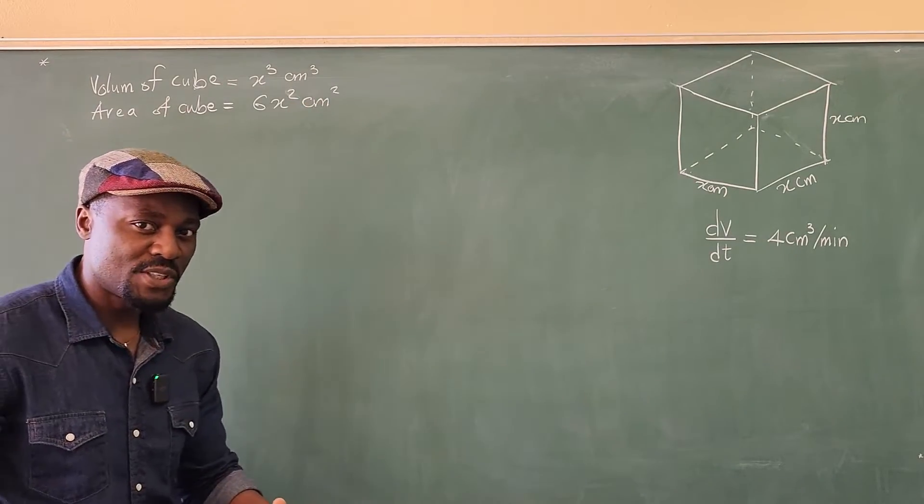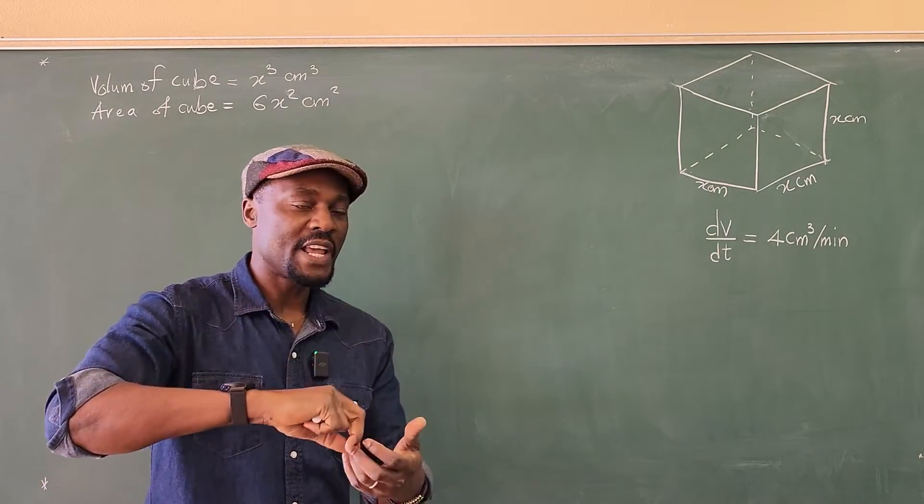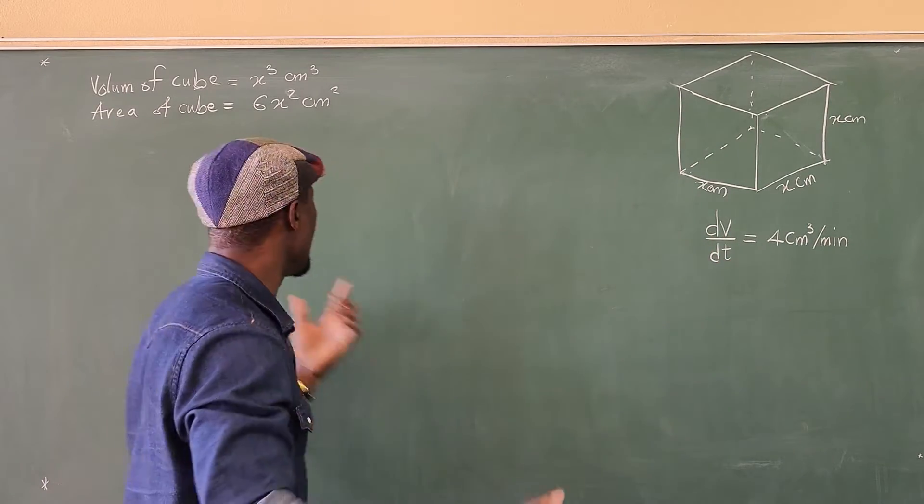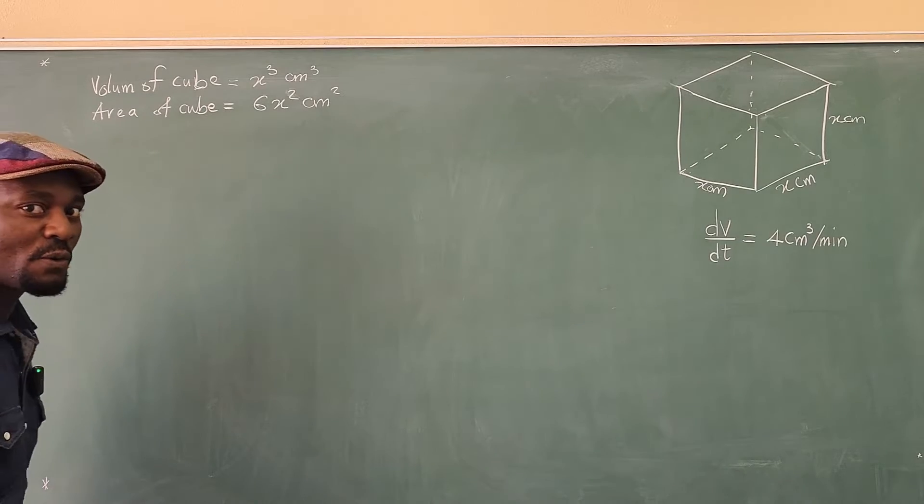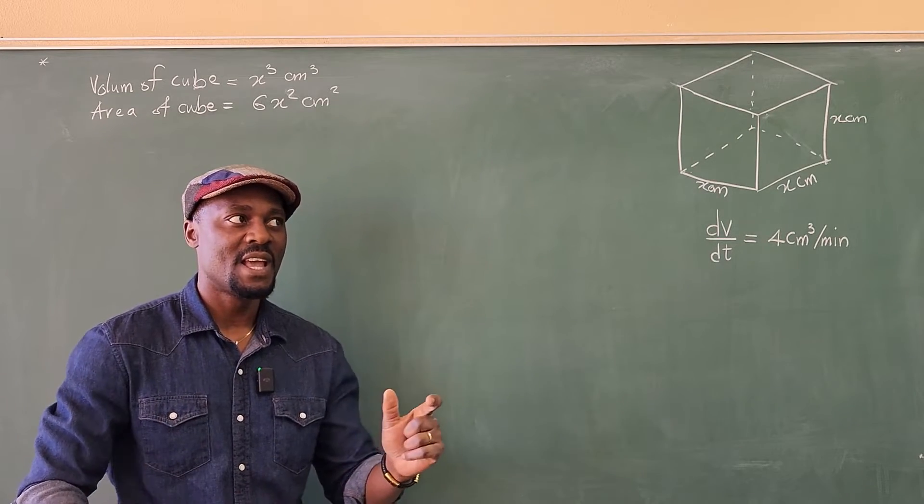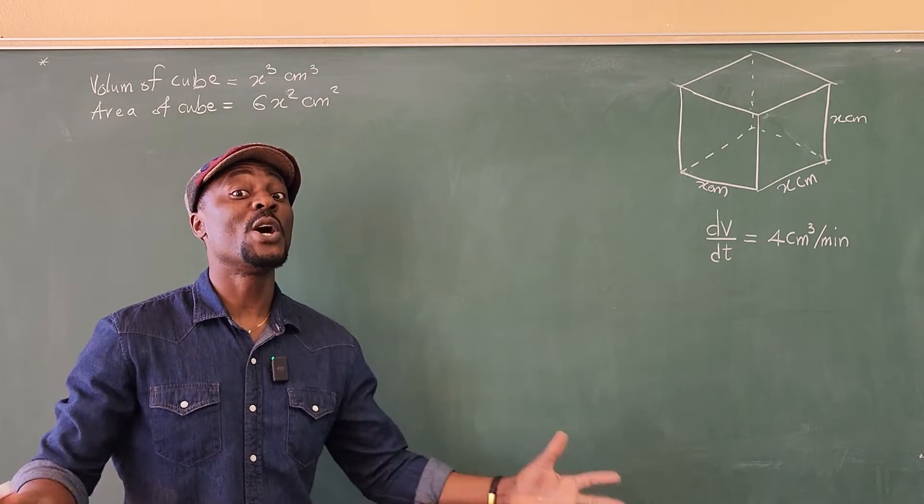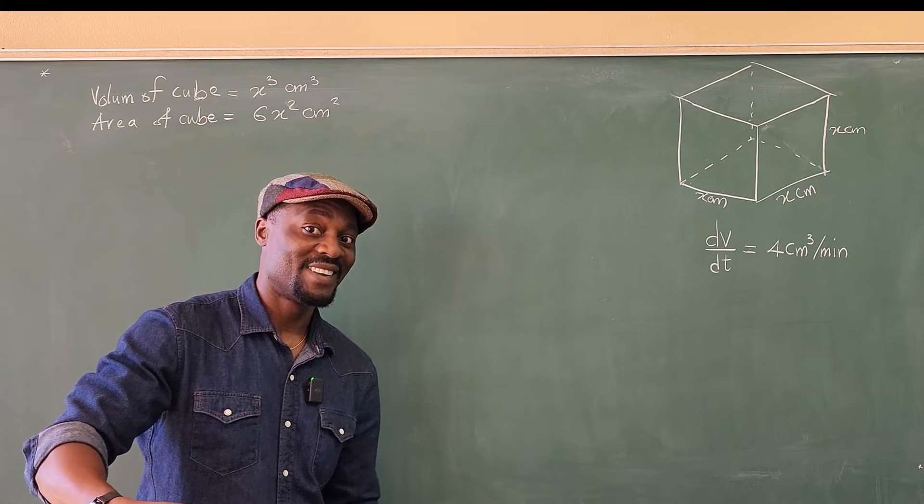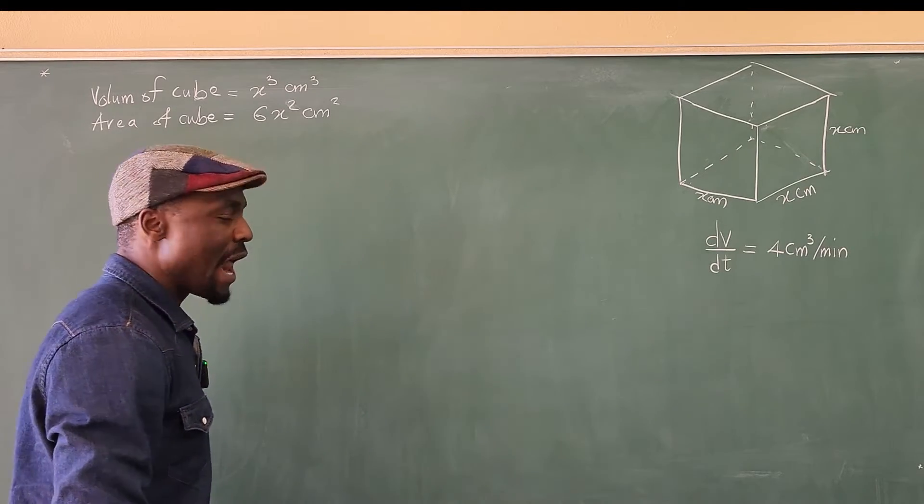So the question is telling us to connect what is between the change in the volume and the change in the area. How do you connect both of them? What formula connects area and volume? We don't know, but we have to create the formula. So how do you connect it? Because you know that both of them contain x, use x as the anchor and use it to connect both of them.